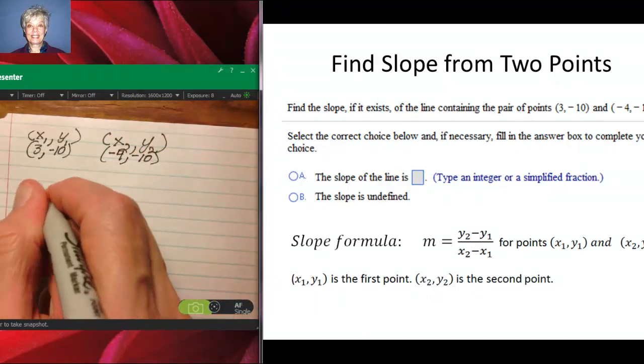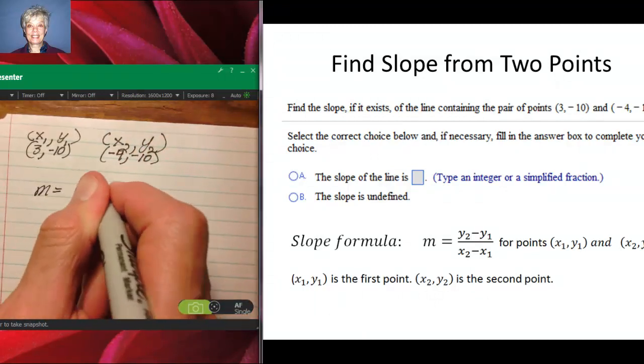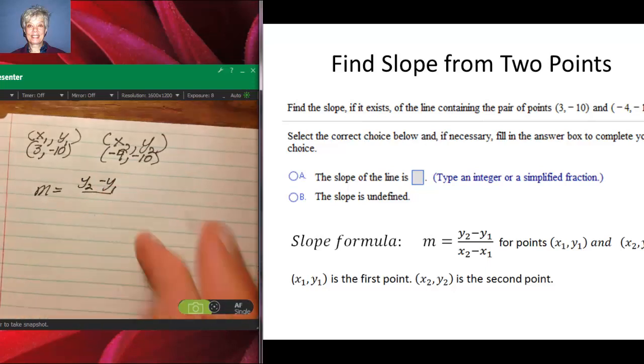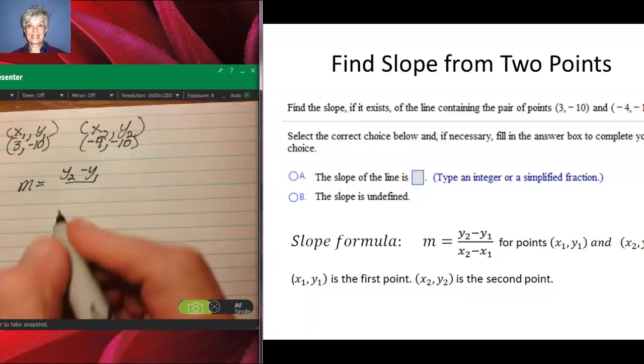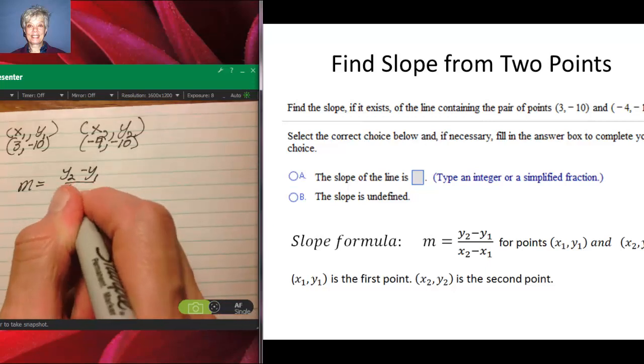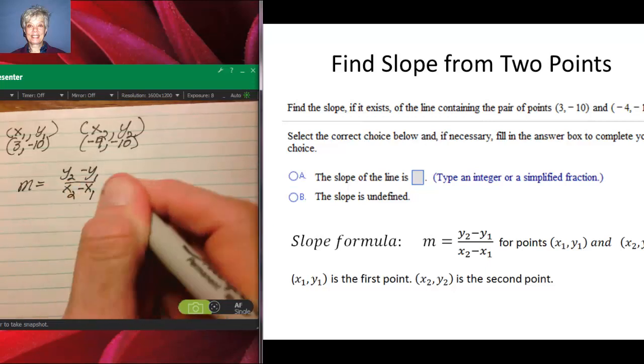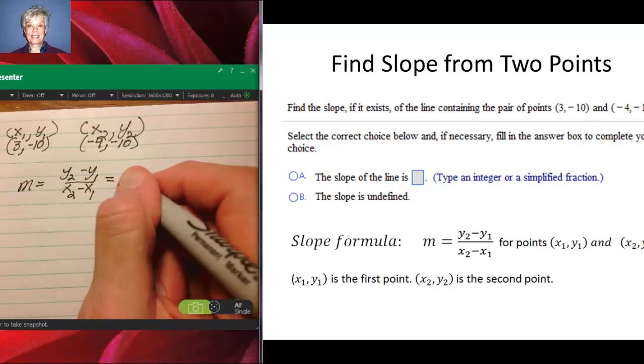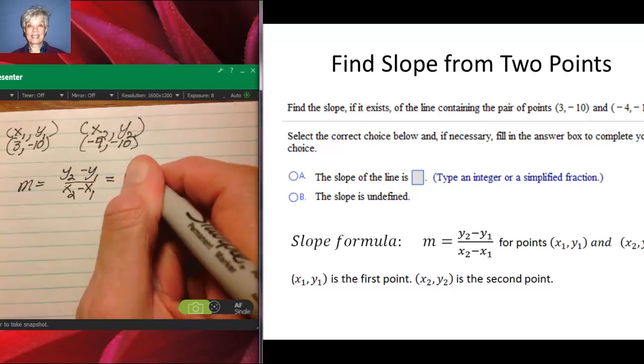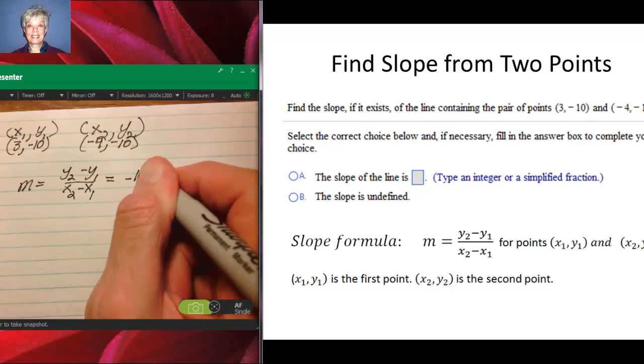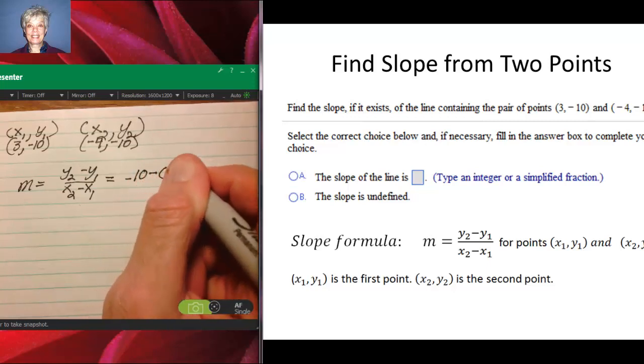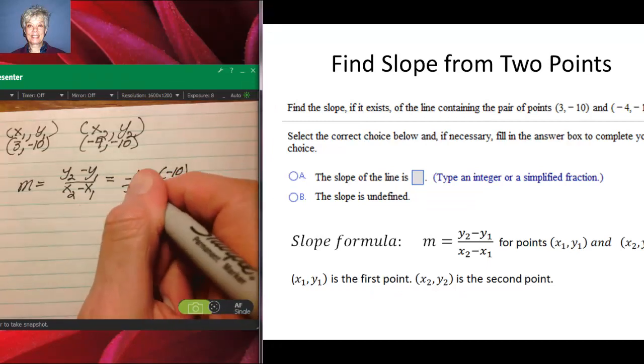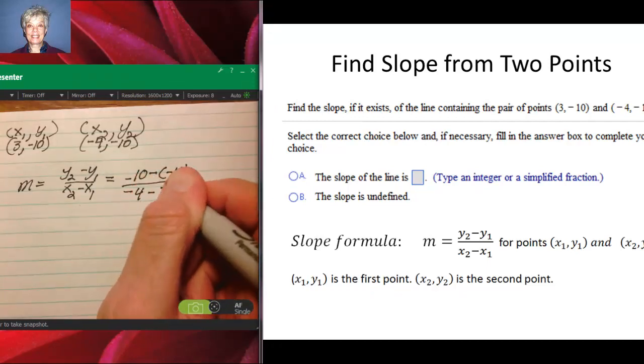We have the formula m equals y2 minus y1 over x2 minus x1. So we're going to have -10 minus -10 over -4 minus 3.